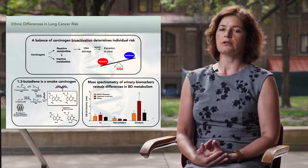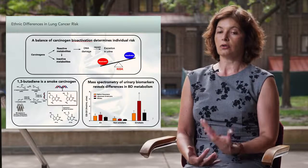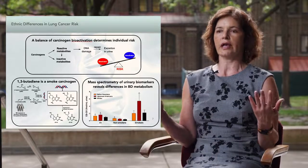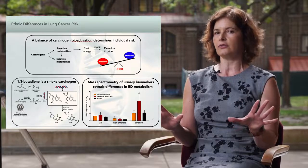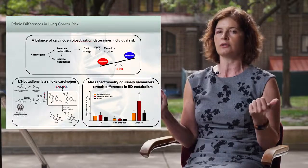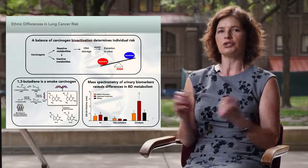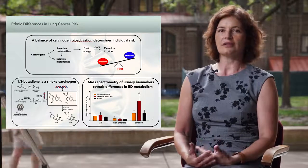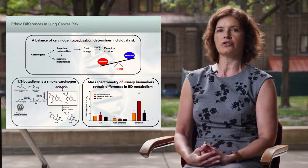We are using the tools of analytical chemistry, epigenetics, and genetics — such as genome-wide association studies — to understand how these different ethnic groups metabolize tobacco carcinogens differently, leading to much higher risk in specific groups. This is very important because we want to understand which smokers are at high risk for the development of lung cancer, so that these individuals can be targeted for smoking cessation and chemoprevention therapies.